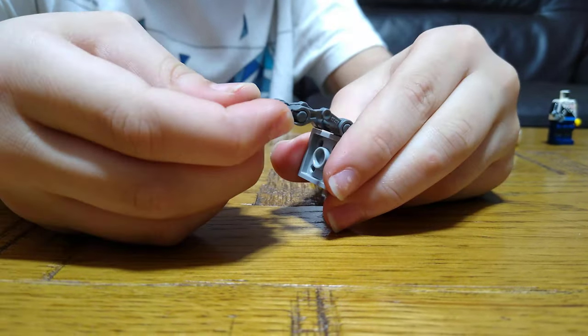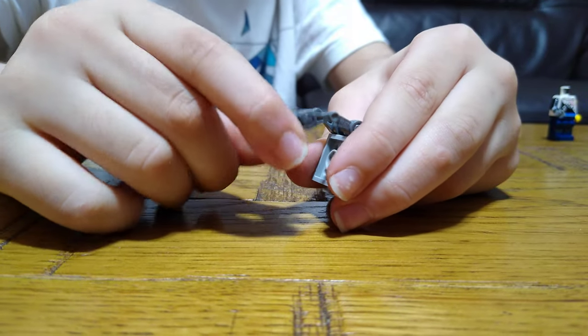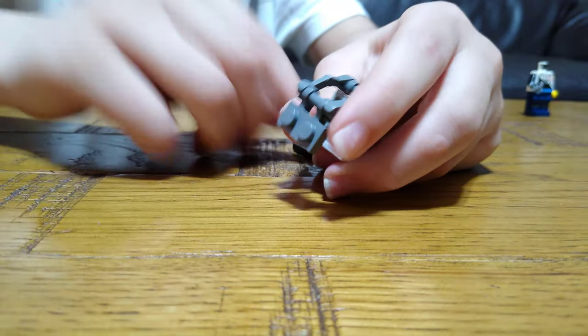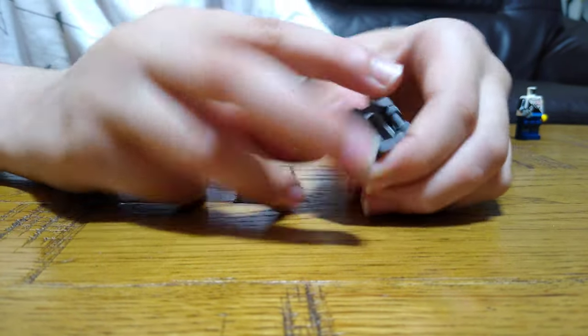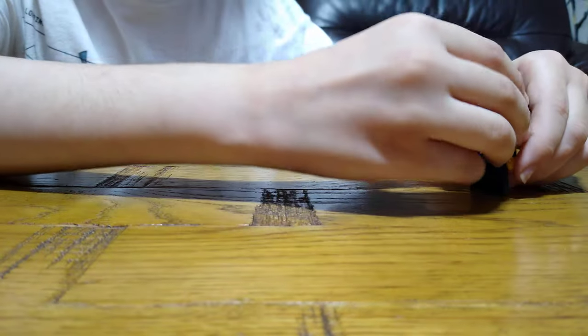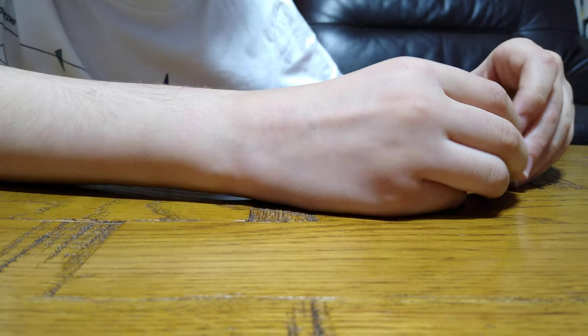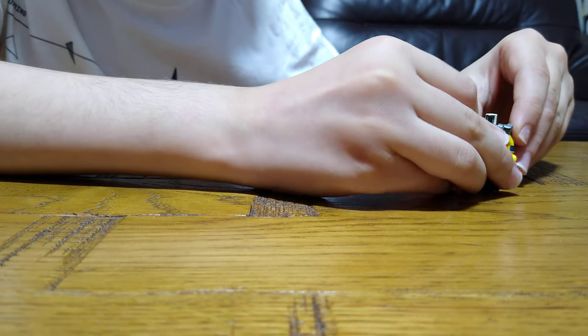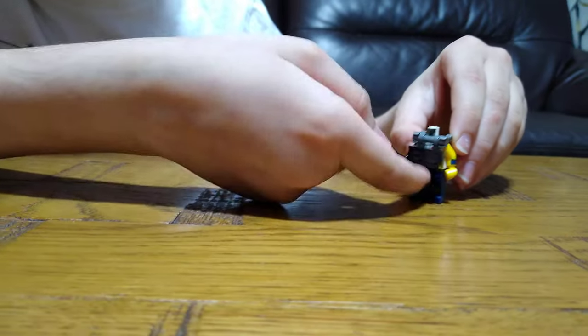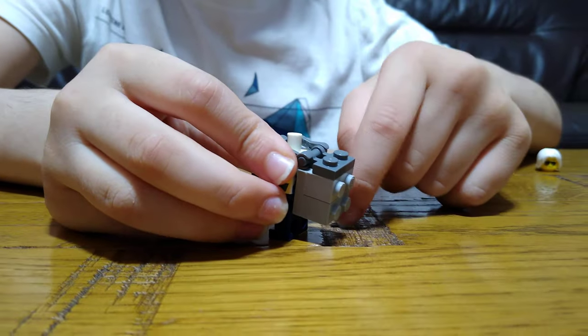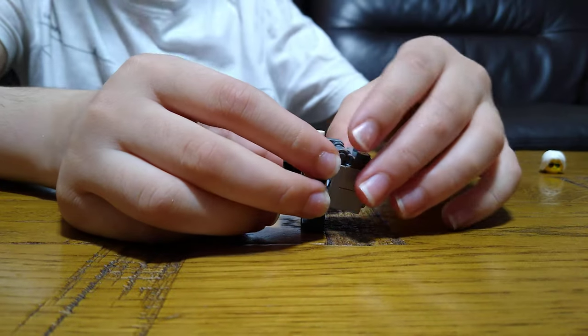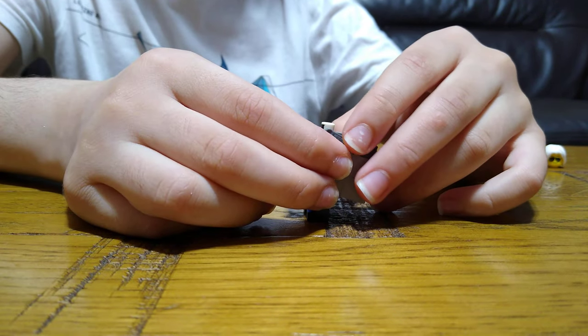And then this will hold the mini figure torso. It's kind of like some armor. And then this grill piece, I could have just somehow did it like this and then put another one down here, and then also put one of these and then a flat, and then I could have made SWAT armor.